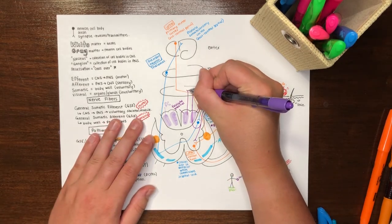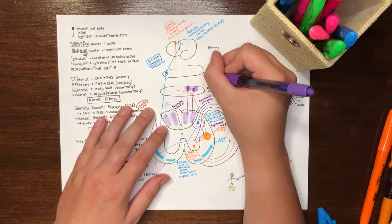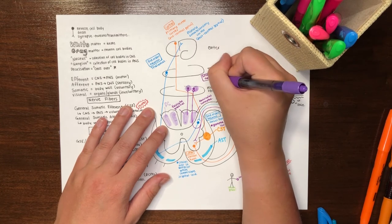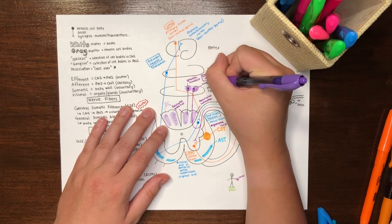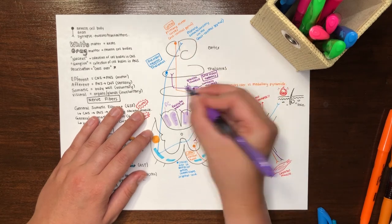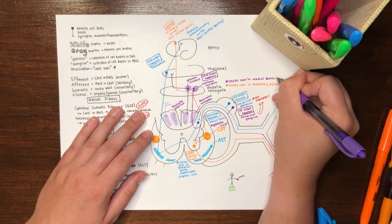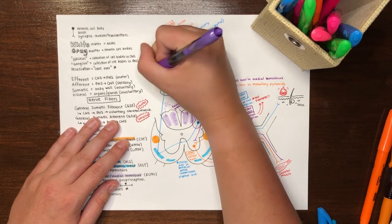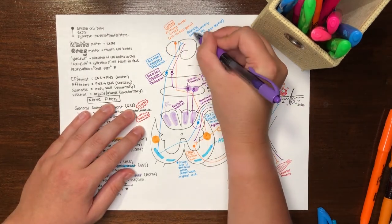DCML fibers will continue to ascend on the ipsilateral side until they reach the medulla oblongata. Here, they will synapse on second-order neurons in their respective collection of cell bodies, the gracile and cuneate nuclei respectively. Second-order neurons from the gracile and cuneate nuclei will then do what second-order neurons do best, and decusate via a white matter tract named the medial lemniscus. Hence why this pathway is called the dorsal column medial lemniscal system. Fibers will then proceed to the thalamus to synapse on third-order neurons. Third-order neurons then terminate in the primary somatosensory cortex for processing, similarly to the ALS-AST pathway.